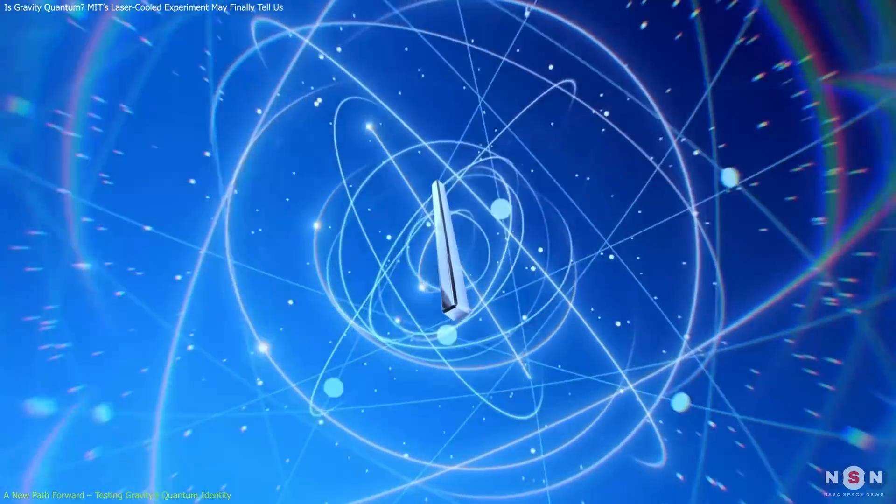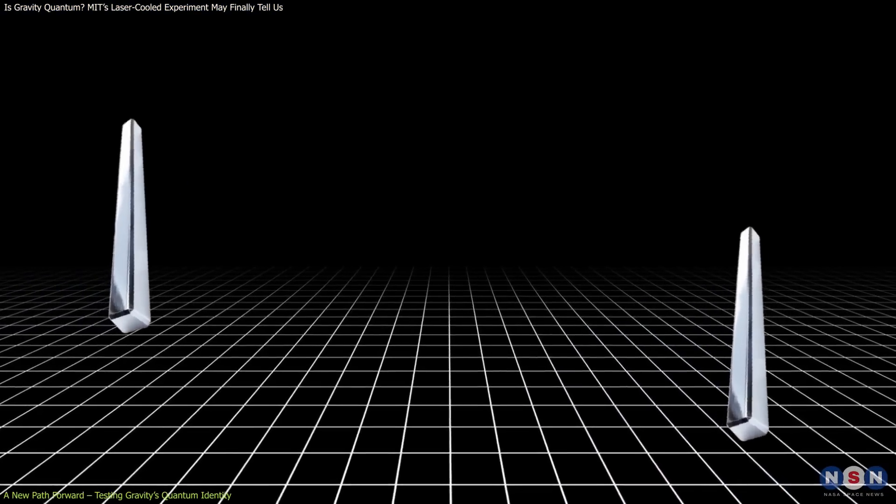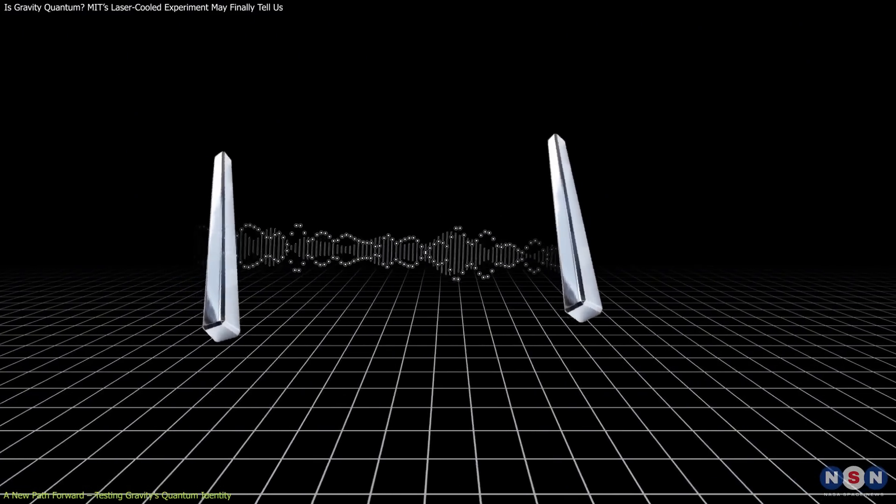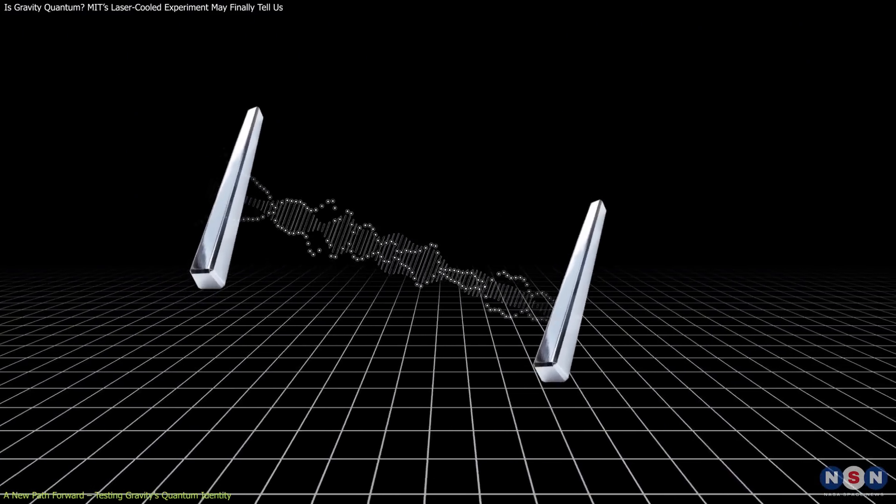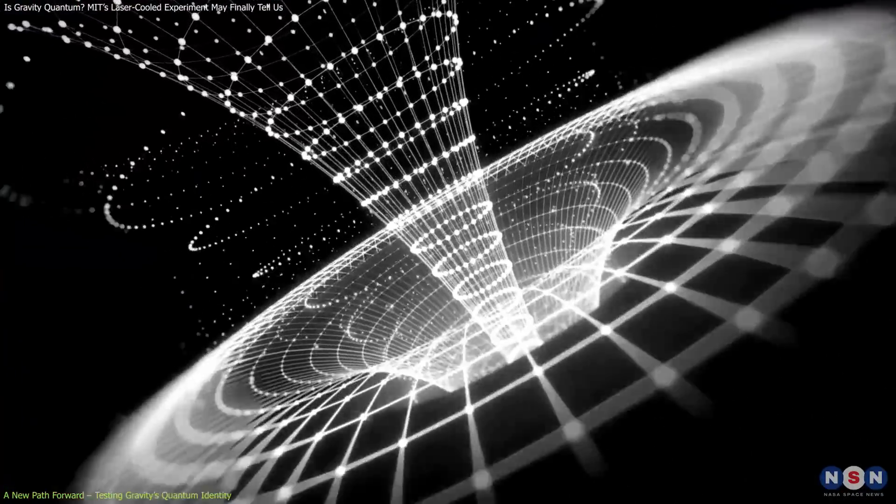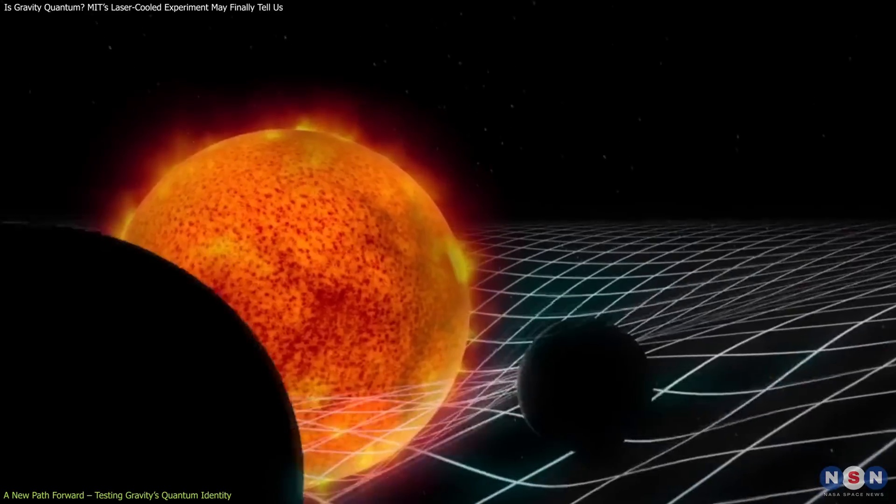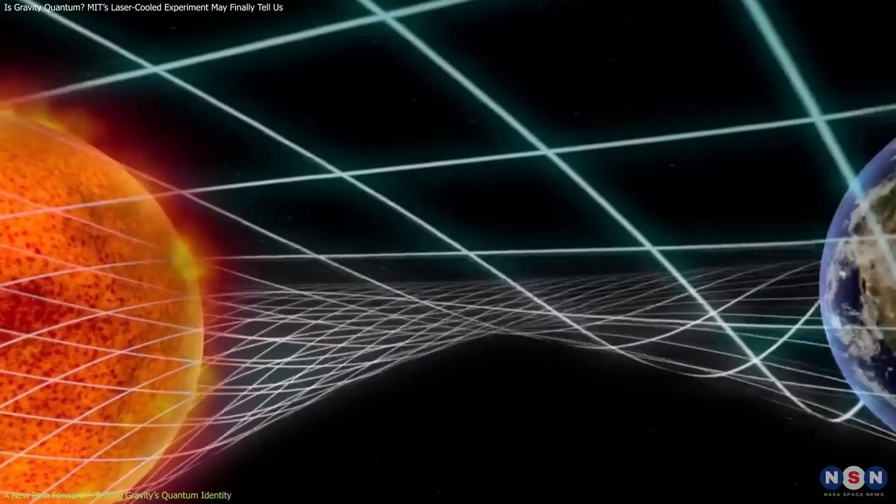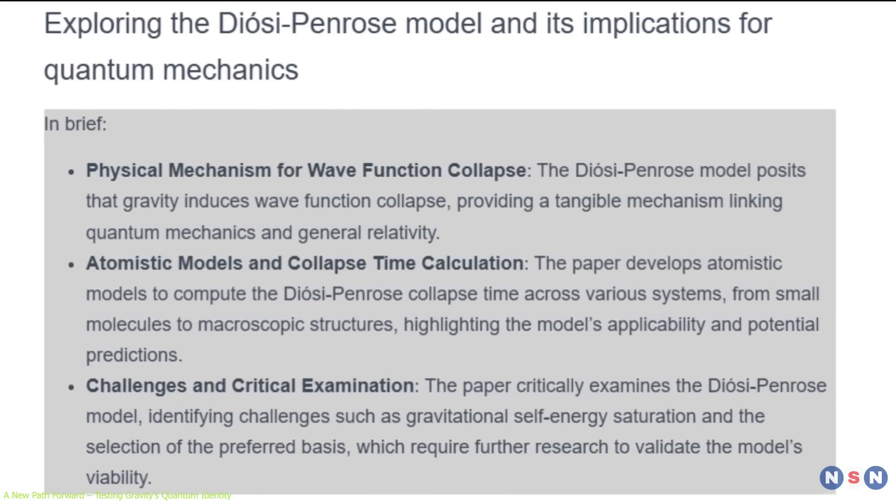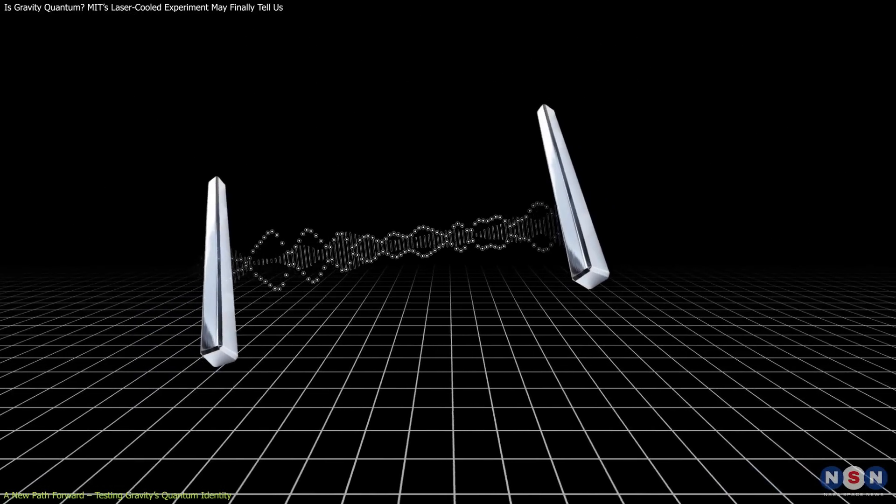Once the oscillator reaches the quantum ground state, a whole new class of experiments becomes possible. The most exciting of these is placing two such systems near one another, with every non-gravitational interaction shielded or minimized. If they become entangled, that is, if changes in one affect the other in a way that can only be explained by quantum theory, it would be the first direct evidence that gravity itself is quantum. This would be a monumental result. Not only would it support the idea of the graviton, the hypothetical quantum particle of gravity, but it would also rule out alternative models that treat gravity as fundamentally classical. Some semi-classical models argue that quantum particles collapse wave functions via gravity, but don't require gravity to be a quantum force. Detecting entanglement would immediately falsify those ideas.